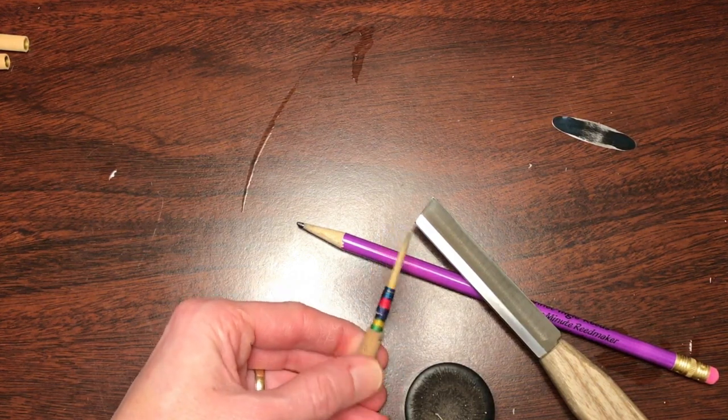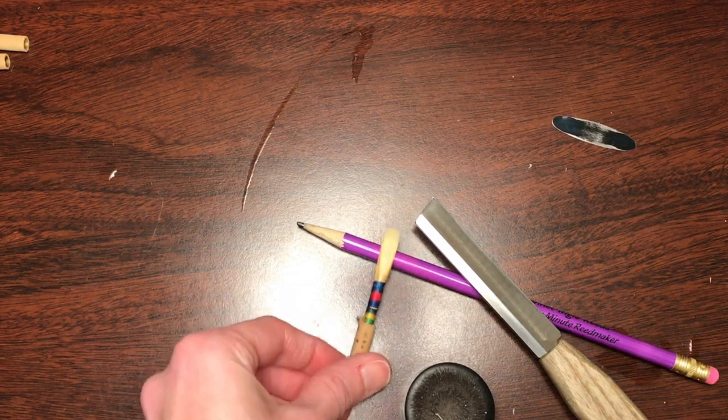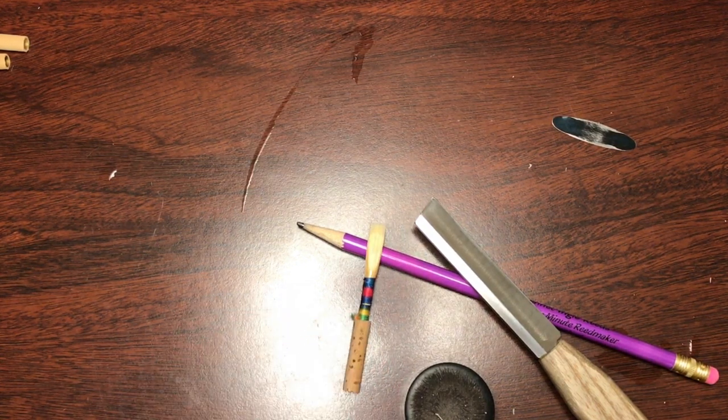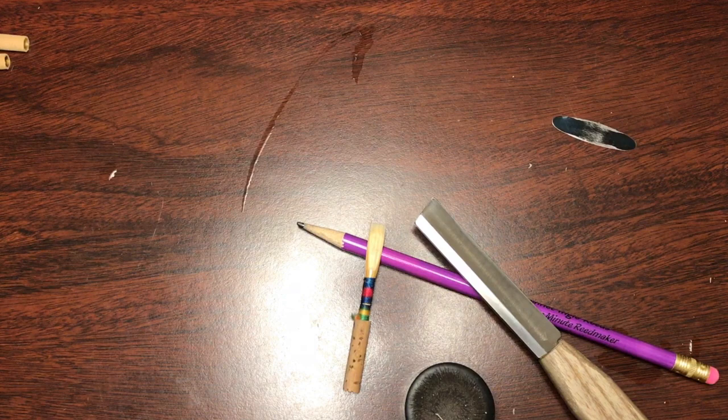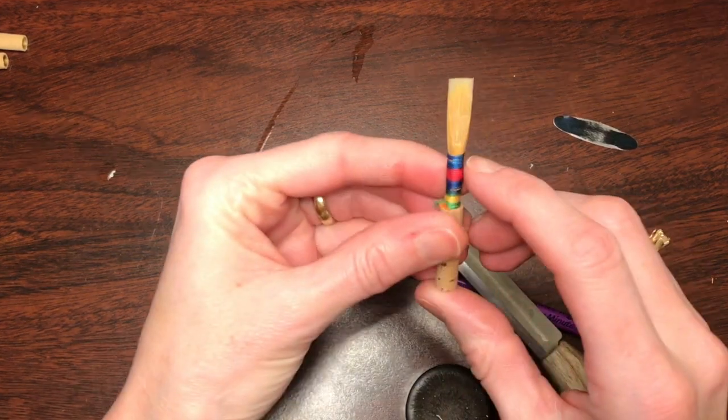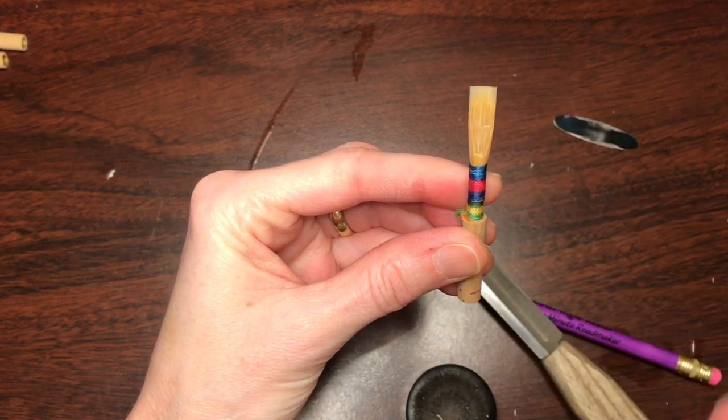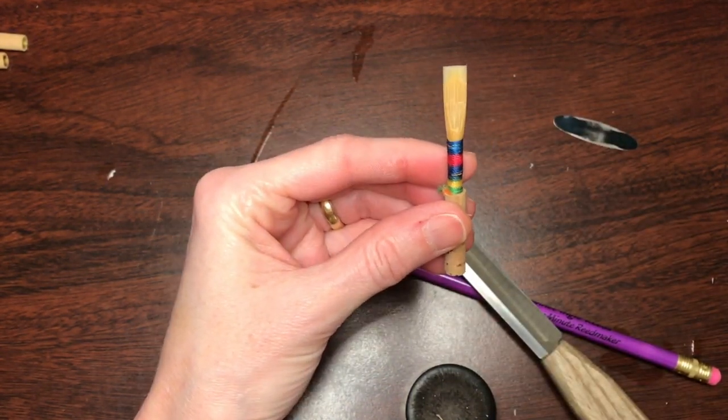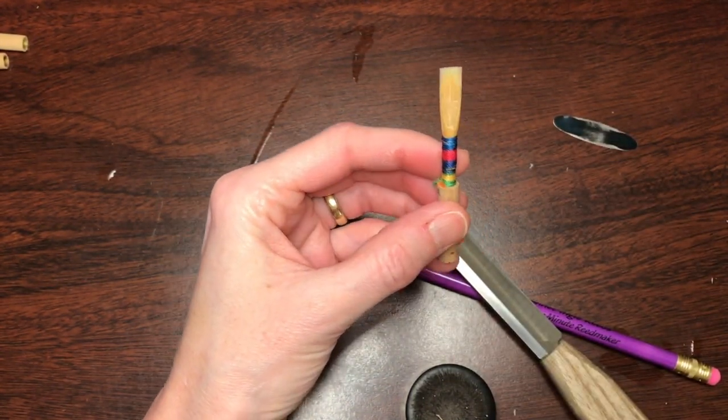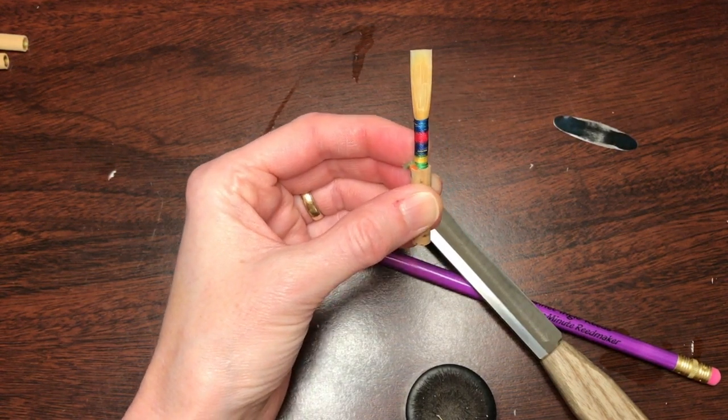And it's still responsive and good. So that is why I like to think about the lower blade as being generally shorter by probably not even half a millimeter, but generally shorter than the upper blade. And this has been a five-minute Reedmaker lesson.